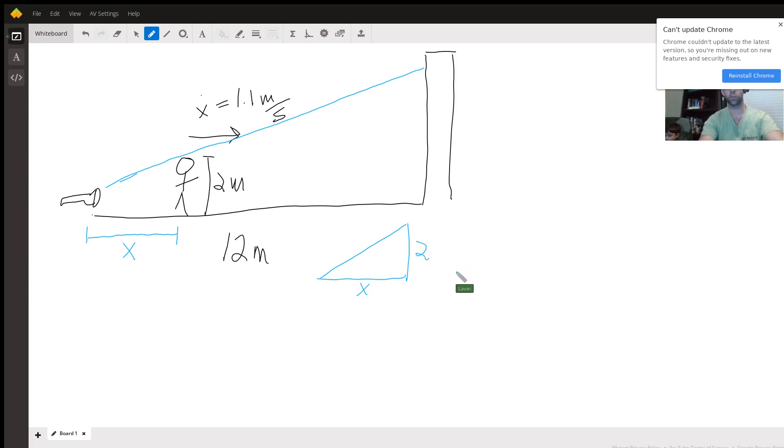And then we also have the overall triangle from the spotlight all the way out to the wall, and then his shadow is going to have some height we'll just call it h, and the distance here is 12.